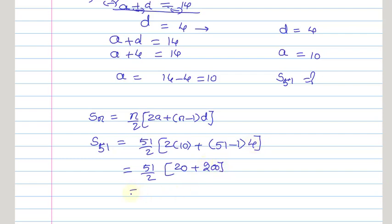So this can be written as 51/2 of 220. Simplifying, this becomes 51 into 110. Doing the product, we get 5,610.